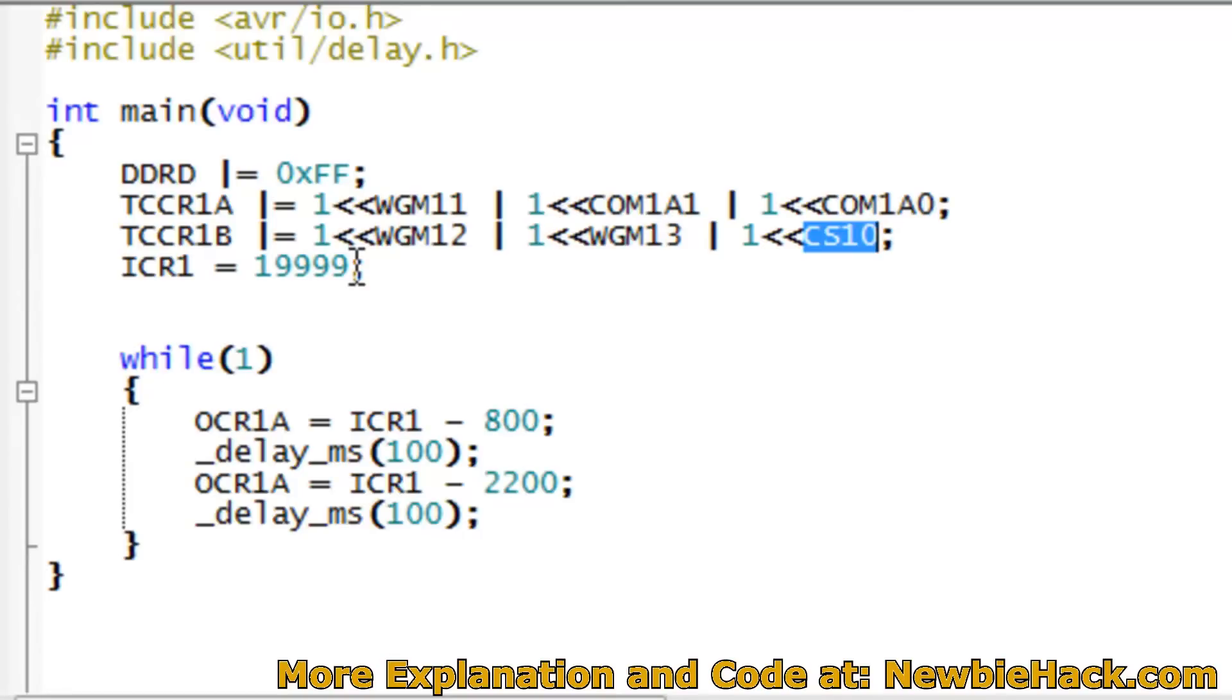When we were using the inverted mode, which is the 1A1, 1A0 outputting to the OCR, we had to subtract either the 800 or the 2200 from ICR1, because we were putting the pulse at the end of the period, not at the beginning. Let's go ahead and make the changes to establish the non-inverted mode.